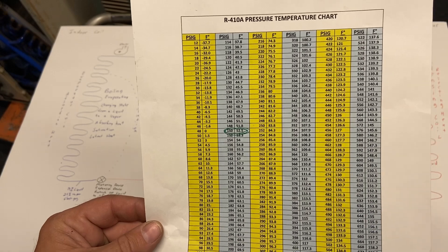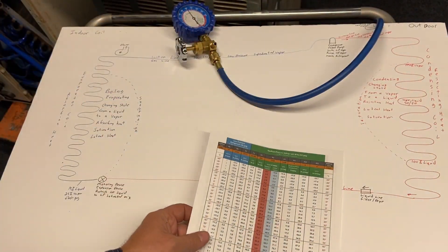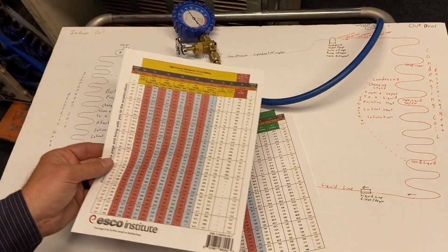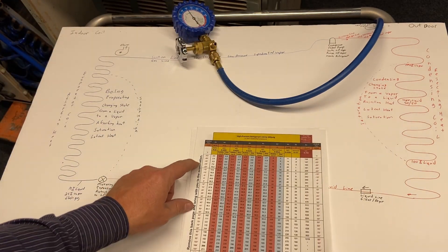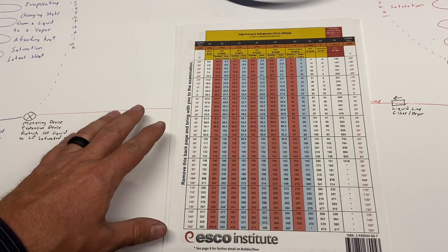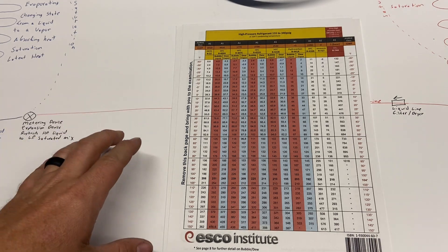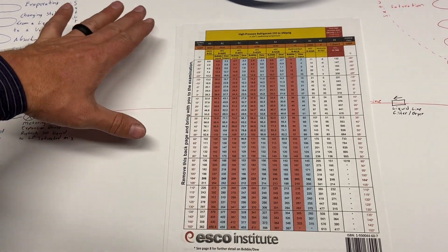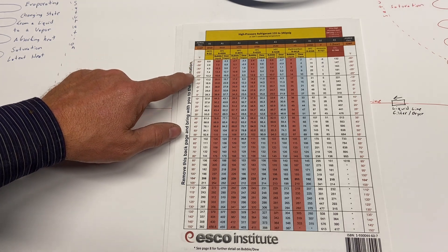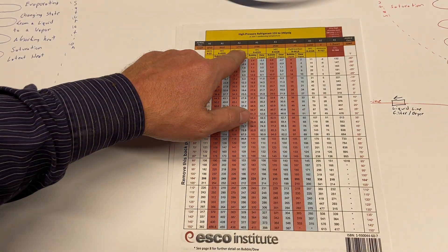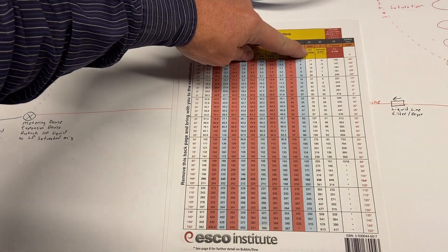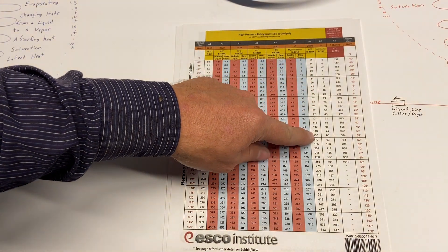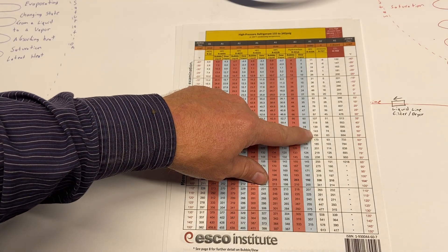This helps get your mind around it, but in reality the temperature-pressure charts you'll encounter are a little bit different — they have multiple different refrigerants. This one is available from the ESCO Institute, which is one of the testing organizations for the EPA test. I like their chart because it has a ton of information and is simple to find. On this side we have temperature in degrees Fahrenheit, and across the top are all the different refrigerants. The refrigerant we're working with is R410A, so I'll scroll down to find 150 PSIG.